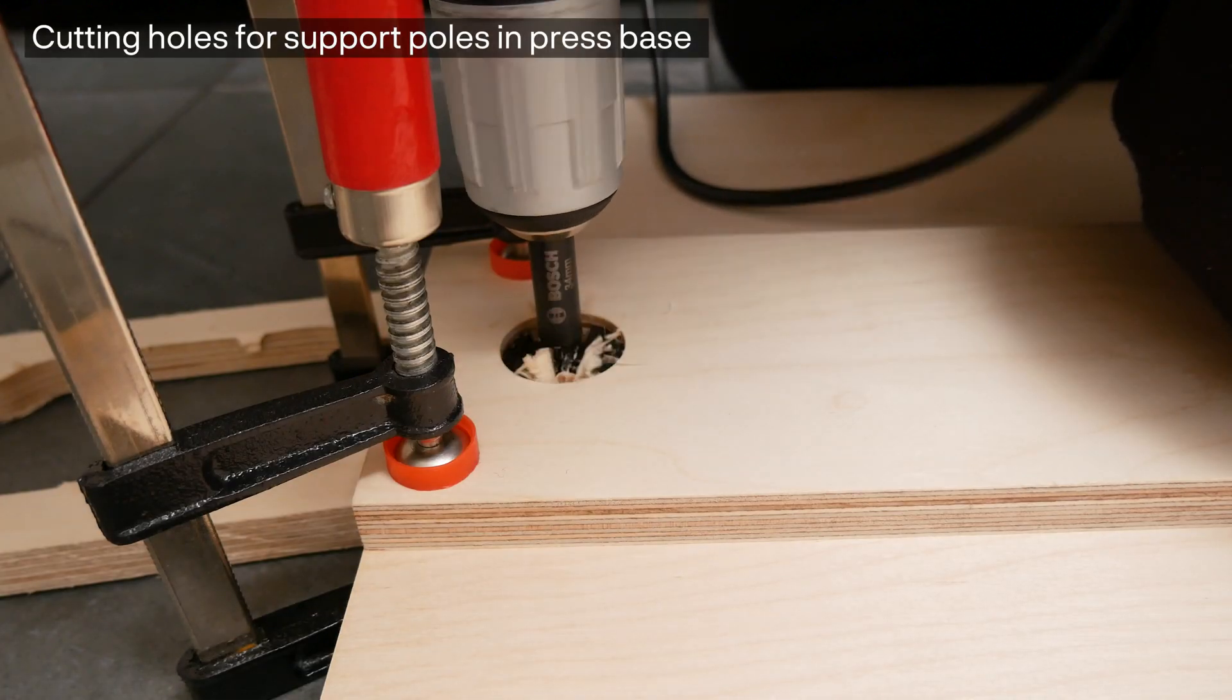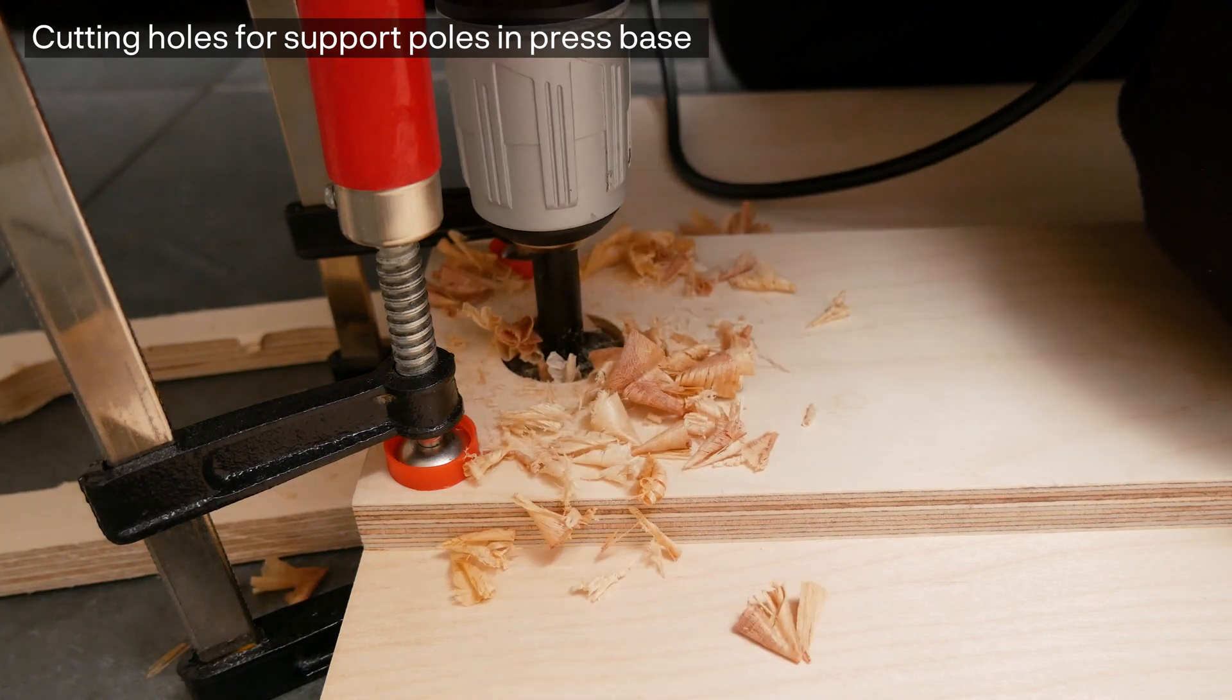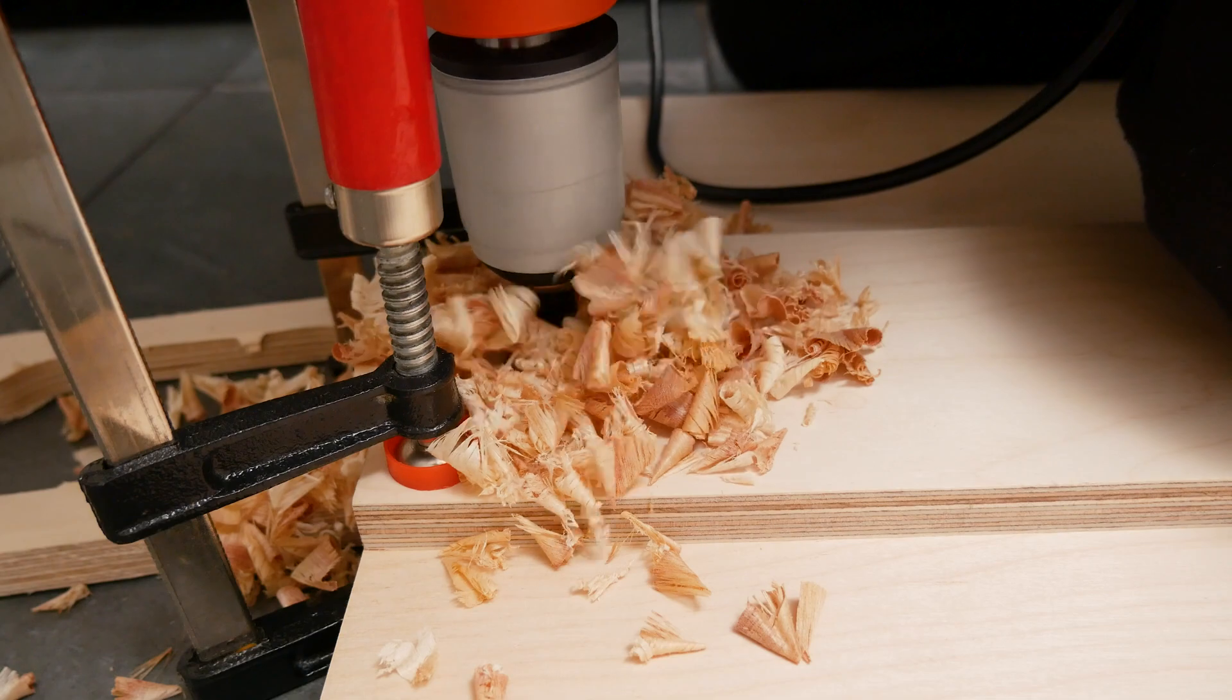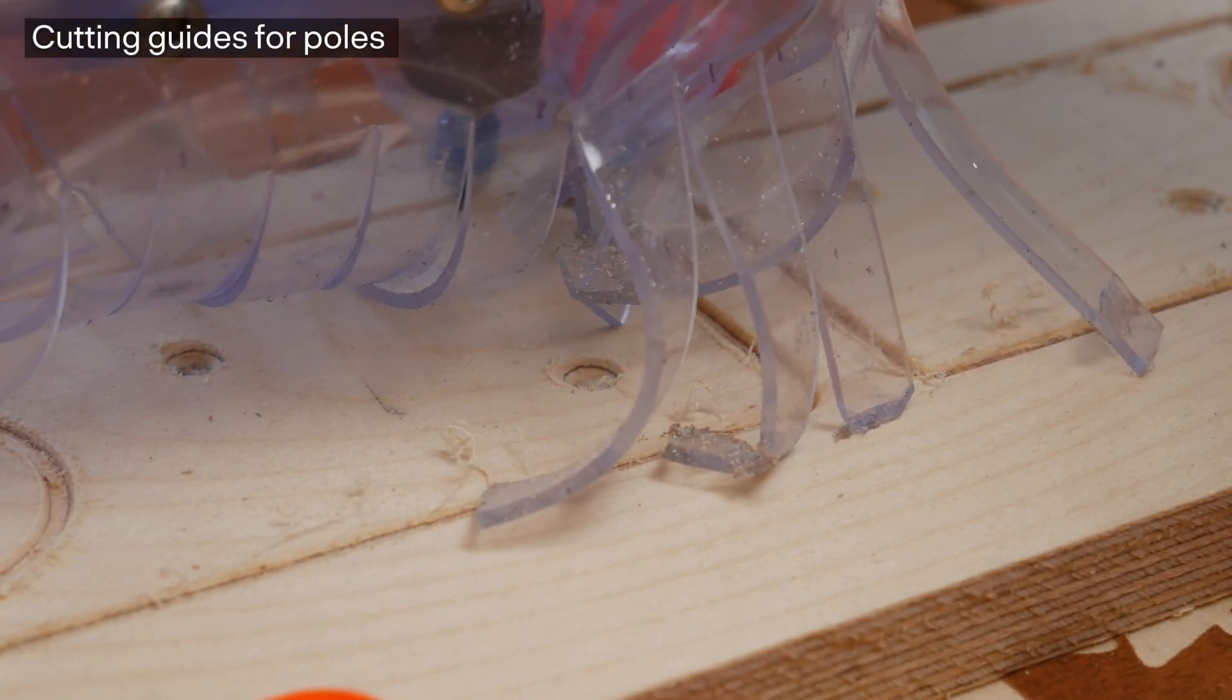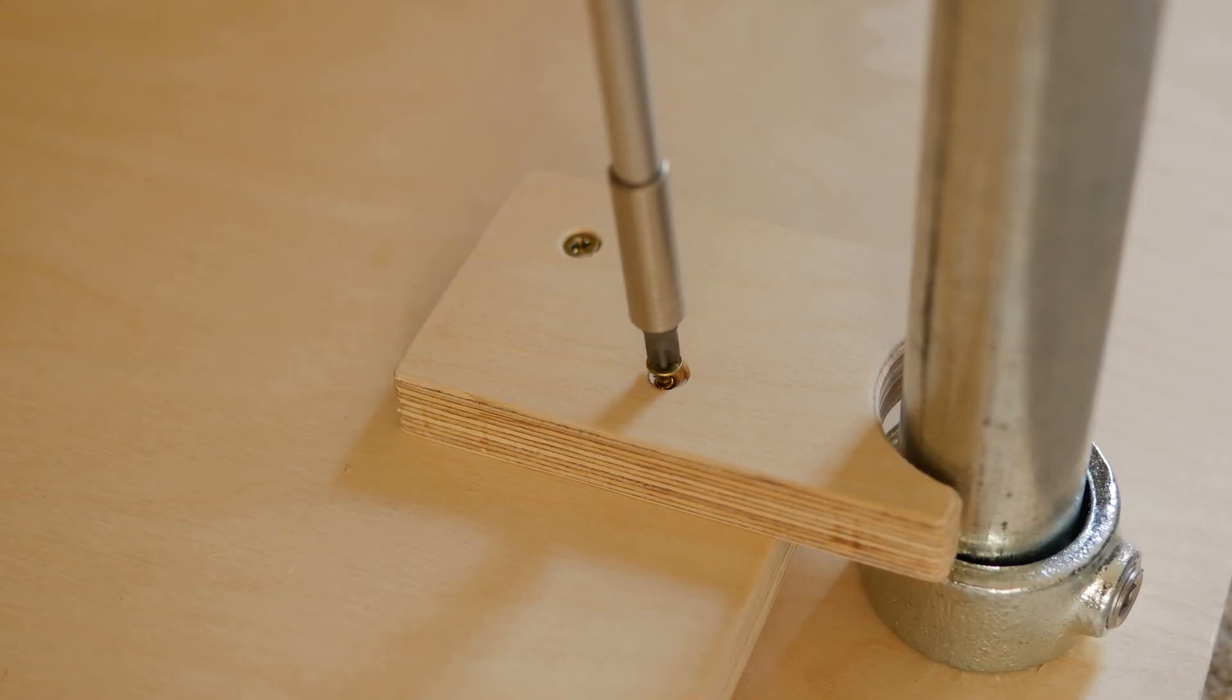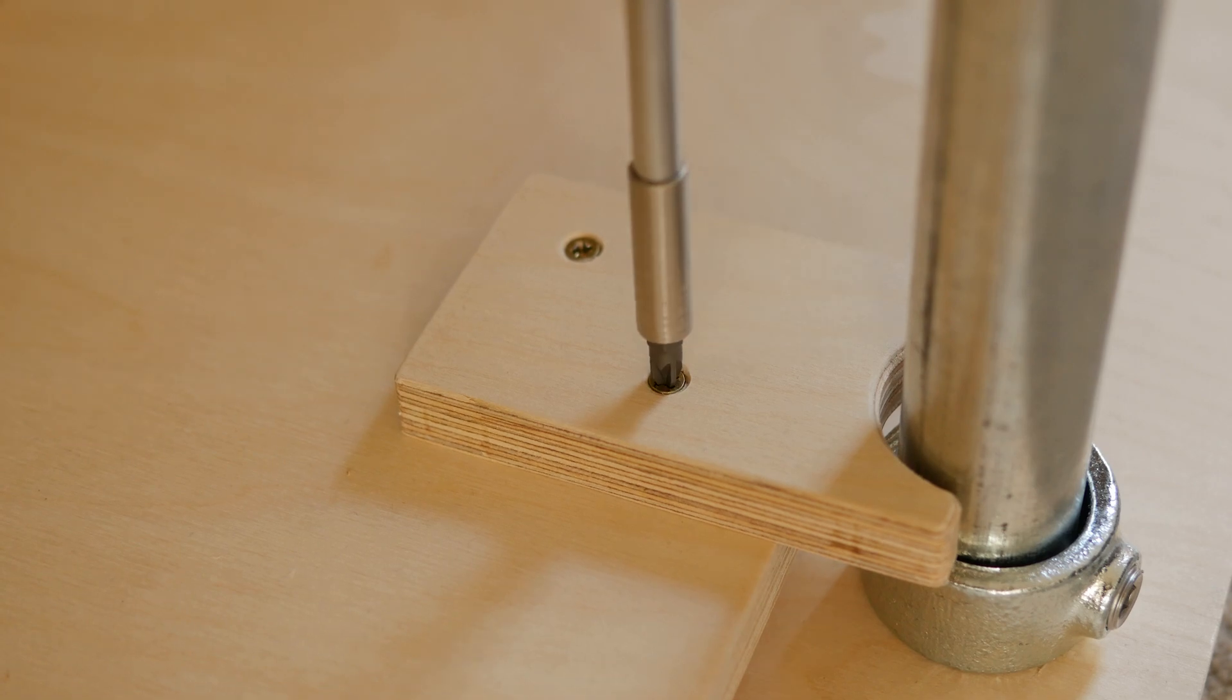Lastly was just cutting some holes for the support poles for the actual bottom of the press. And then I'm just cutting some guides that will stop the press plate from moving around when I'm twisting the press up and down. You can see that they just essentially guide it up and down.